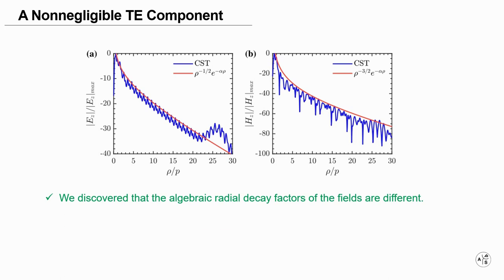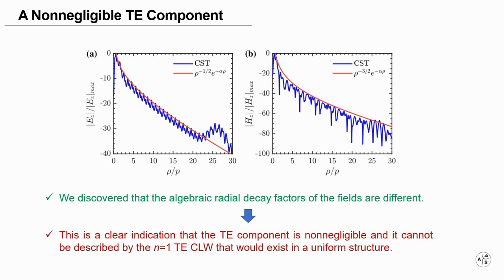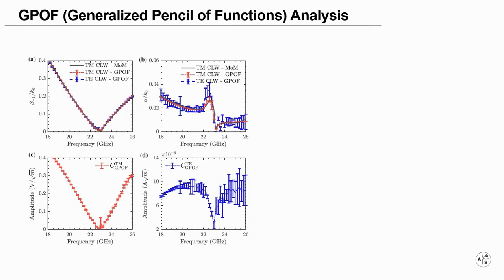This is a clear indication that the TE component is non-negligible and cannot be described by the n equals one TE cylindrical leaky waves that would exist in a uniform structure.